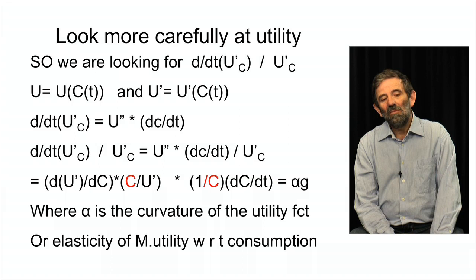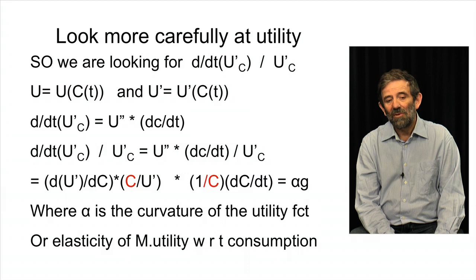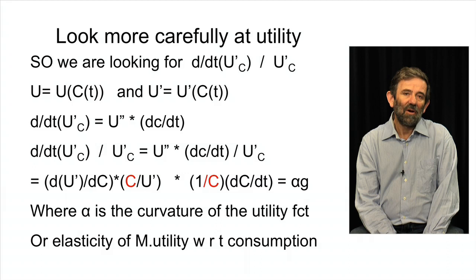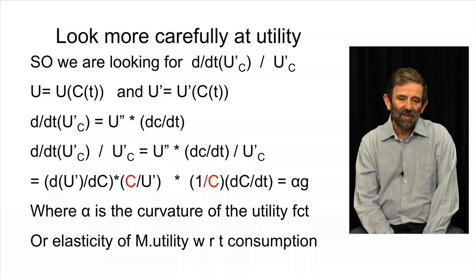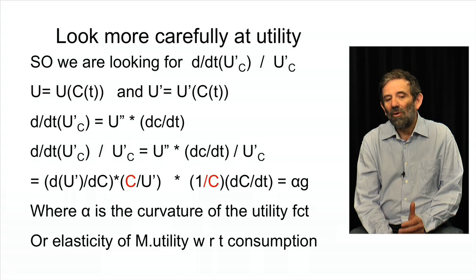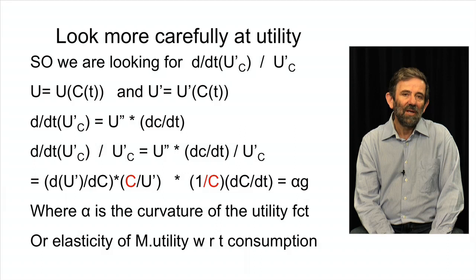Look at the term to the left. It's the derivative of the marginal utility of consumption with respect to consumption, and then multiplied by consumption divided by marginal utility. That's the definition of an elasticity of marginal utility. It is an expression of the curvature of the utility function. The more curved it is, the less rich people care about money, the more important is α, and the bigger would be the optimal discount rate, in fact.